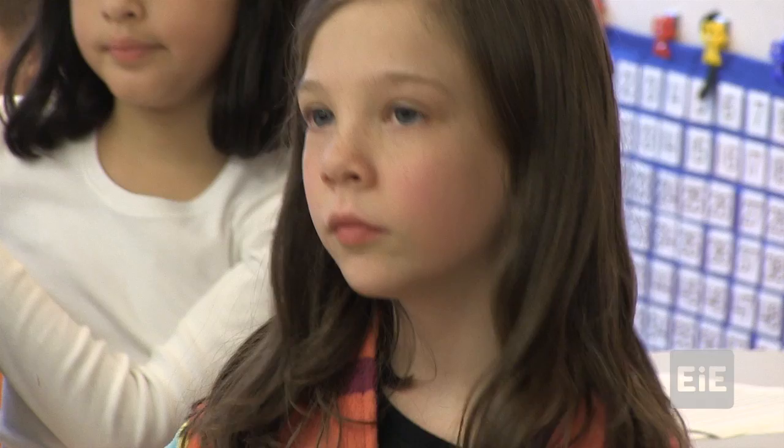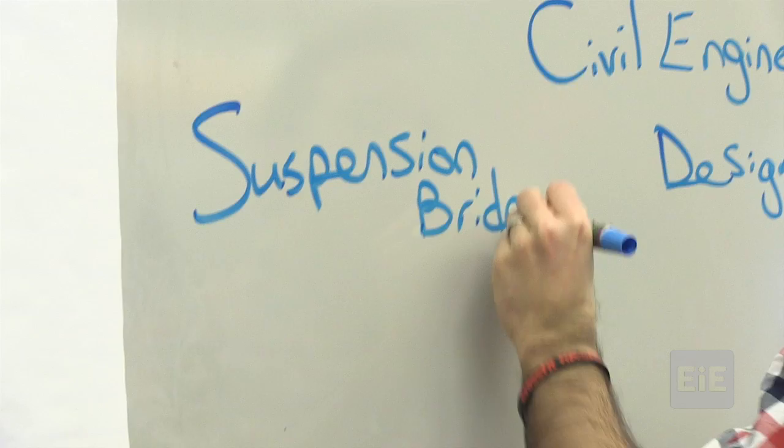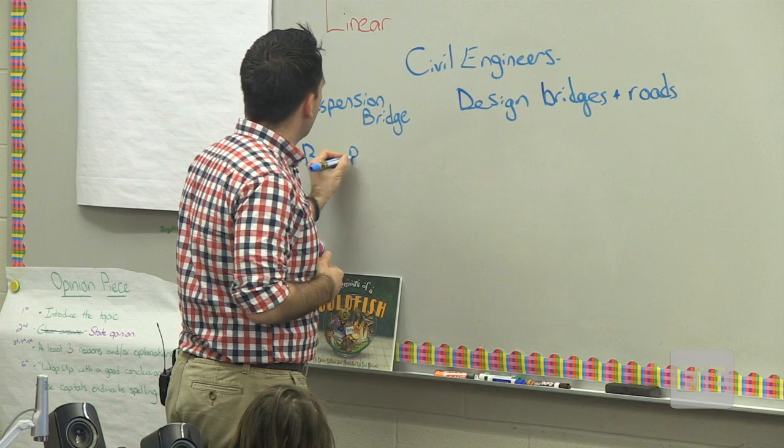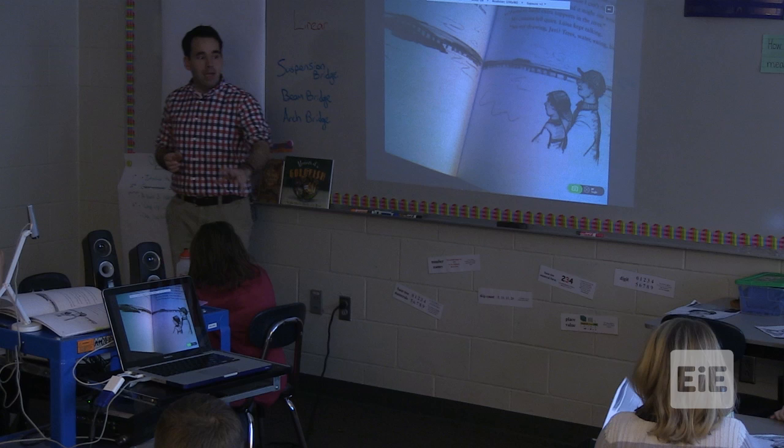Today we talked about bridges. Tell me one kind of bridge. Suspension bridge. We have a suspension bridge. Give me another one. A beam bridge. And there's one more. Arch bridge. And arch bridge. You've done a very, very nice job, civil engineers. Tomorrow we're going to start an activity and work a little bit more on this.